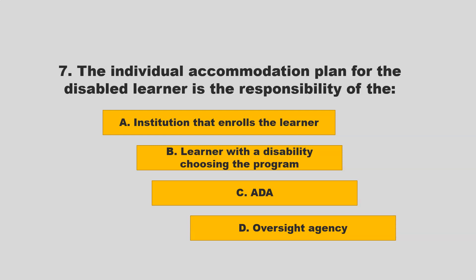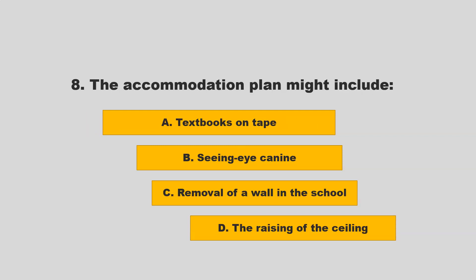The individual accommodation plan for the disabled learner is the responsibility of: A) the institution that enrolls the learner; B) the learner with a disability choosing the program; C) ADA; D) oversight agency. If you chose A — institution that enrolls the learner — you are correct. The accommodation plan might include textbooks on tape, seeing eye canine, removal of a wall in the school, or the raising of the ceiling. If you chose A — textbooks on tape — you are correct.